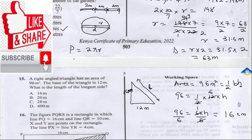To find the length, we are going to employ Pythagoras' theorem, which is 16 squared plus 12 squared is equal to L squared. When you do 16 squared, you get 256, plus 144, which gives us L squared.